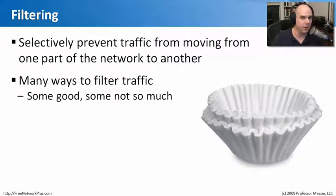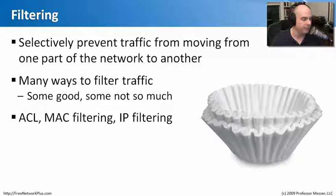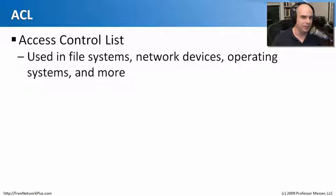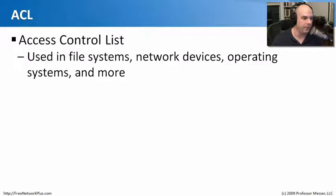There are many different ways to filter traffic. The ways we're going to talk about in this module are ACL, MAC filtering, and IP filtering. ACLs is a generic term that describes a way to filter based on a policy that we would put in a file system, network devices, and operating systems.